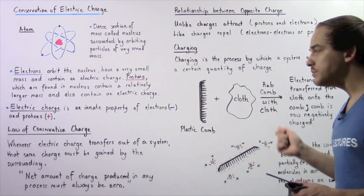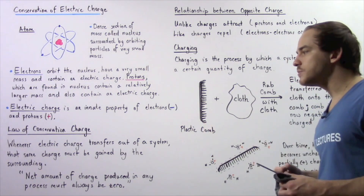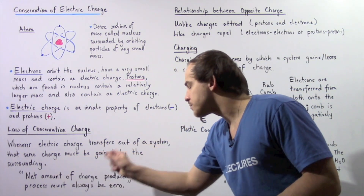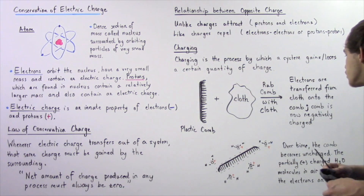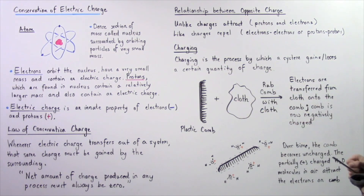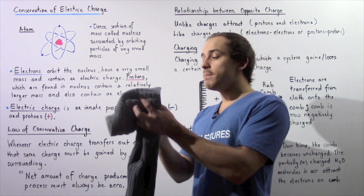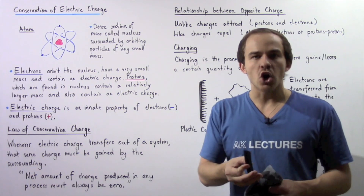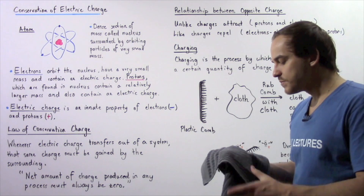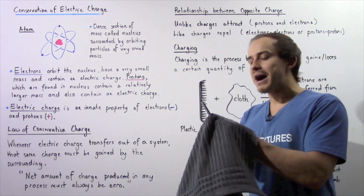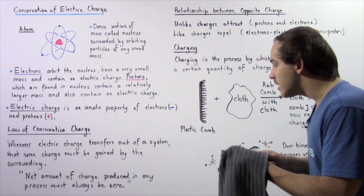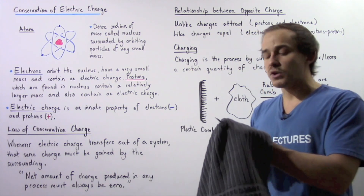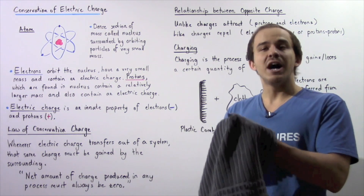The net charge of these two objects will still be zero, because initially the two objects had a neutral charge — and that's because of the law of conservation of electric charge. The net amount of charge produced in any process must always be zero. So after rubbing the comb with the cloth, the comb becomes negatively charged. When I separate the two objects, the comb will have a negative charge.